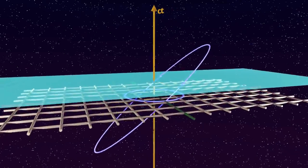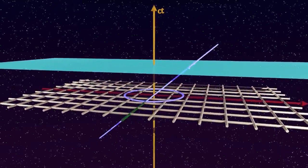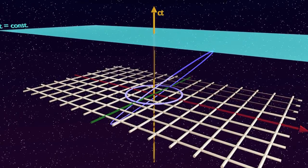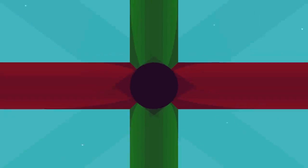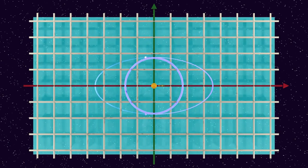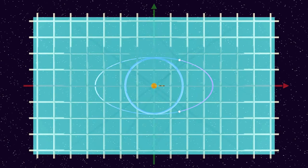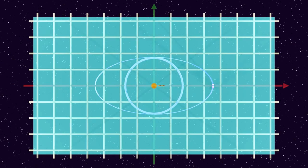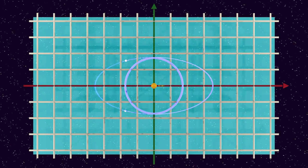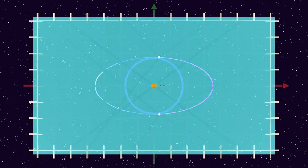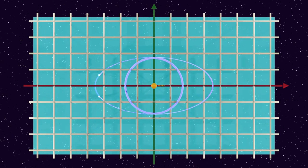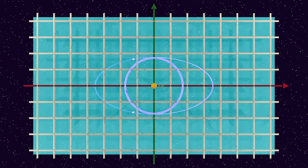Conversely, the space-time ellipse can be viewed as the space-time trajectory of the point-like flashes. If we look at the constant time planes in a projection along the time axis, we retrieve a real-time view of the two-dimensional space plane. Now the moving flashes appear again to follow an elliptic trajectory, elongated in the direction of motion exactly by the factor of time dilation.